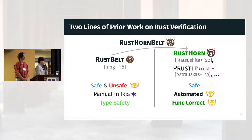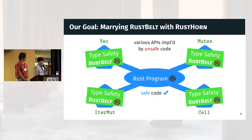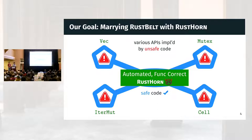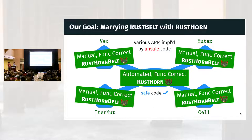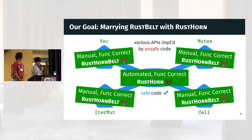The goal of our work, RustHornBelt, is to marry RustBelt with RustHorn. Our predecessor RustBelt is a foundation for verifying type safety of Rust's type system — it verifies unsafe code implementation of each API manually in the separation logic Iris. RustHorn can automatically verify functional correctness of a Rust program without unsafe code. So our work, RustHornBelt, puts these two things together. It is the foundation for verifying functional correctness — not just type safety — of Rust programs with APIs implemented by unsafe code. Those APIs verified by RustHornBelt can be soundly linked with other safe Rust code, which are in turn automatically verified by RustHorn. In short, RustHornBelt does for RustHorn what RustBelt did for Rust's type system, extending it to account for unsafe code.